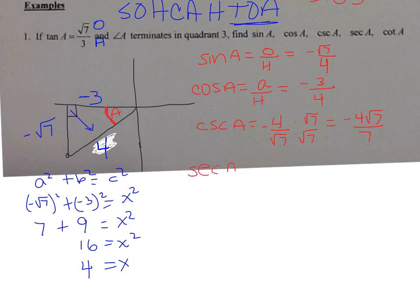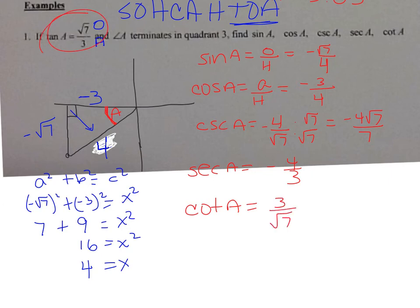Now secant A: secant is the reciprocal of cosine. Flip cosine, which is negative 3 over 4, to get negative 4 over 3. Then cotangent A: cotangent is the reciprocal of tangent. Flip tangent to get 3 over square root of 7. Rationalize the denominator by multiplying top and bottom by square root of 7, giving 3 square root of 7 over 7.